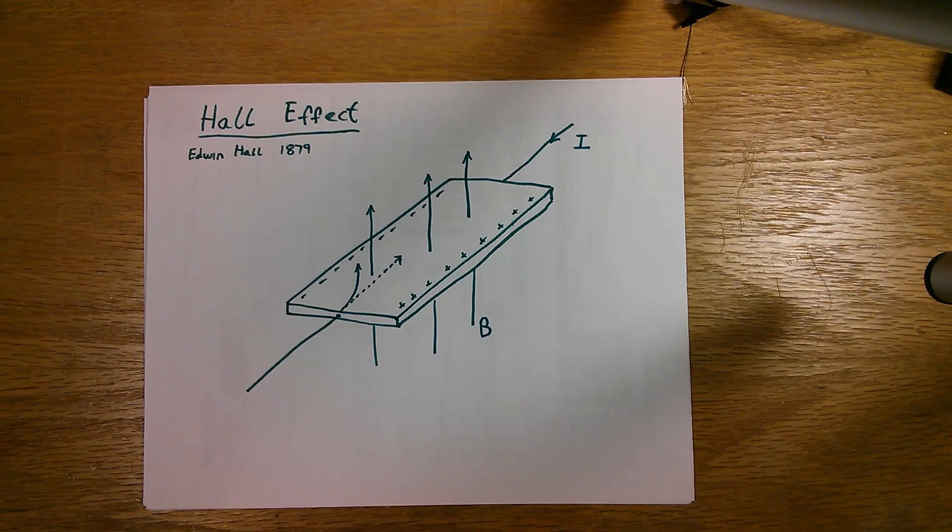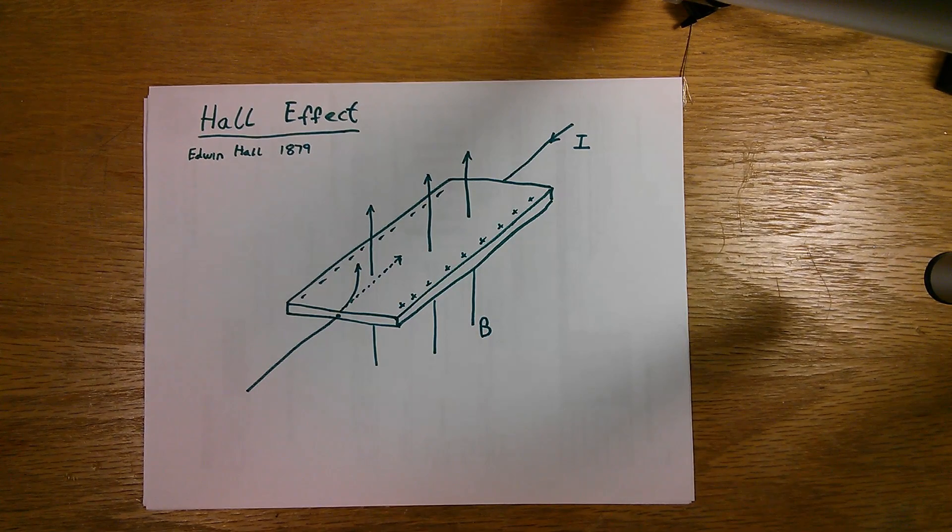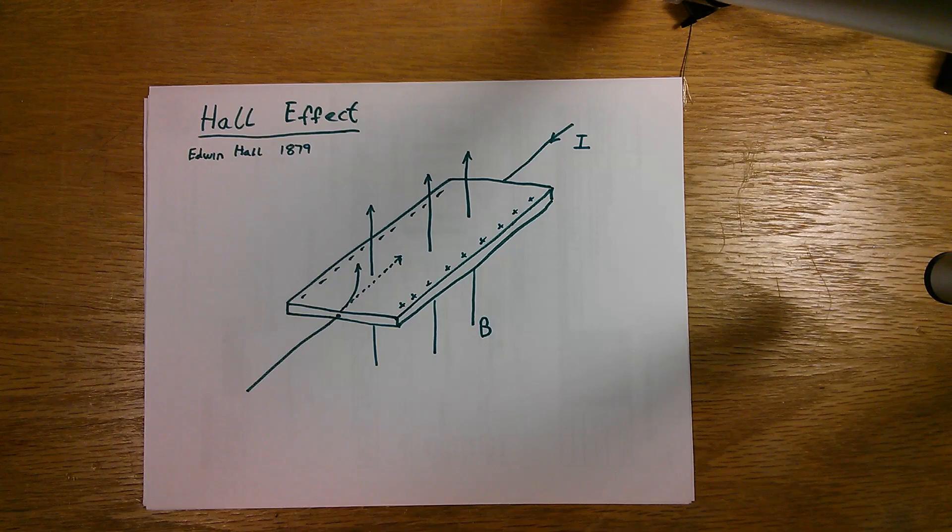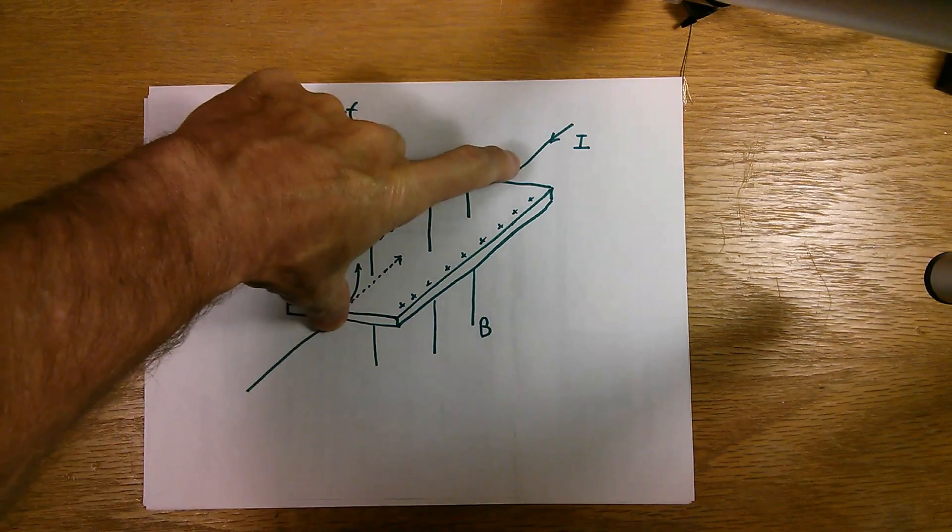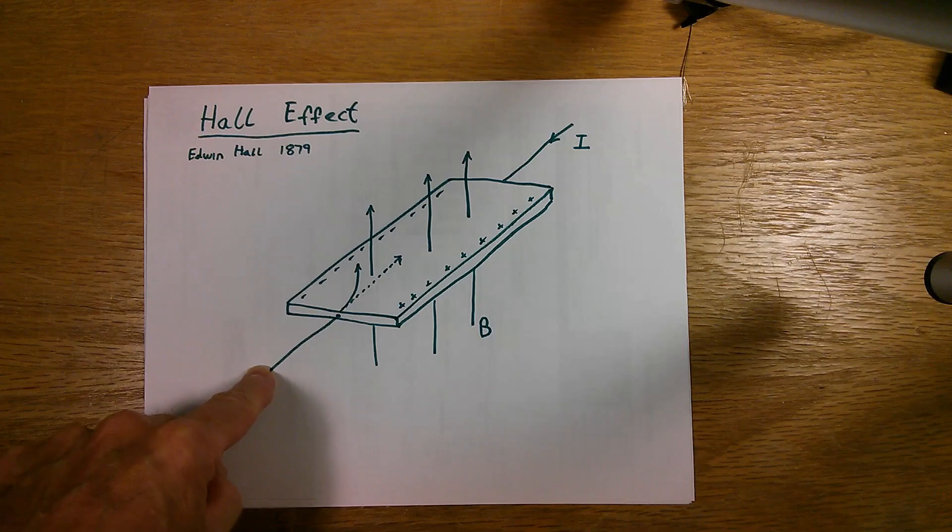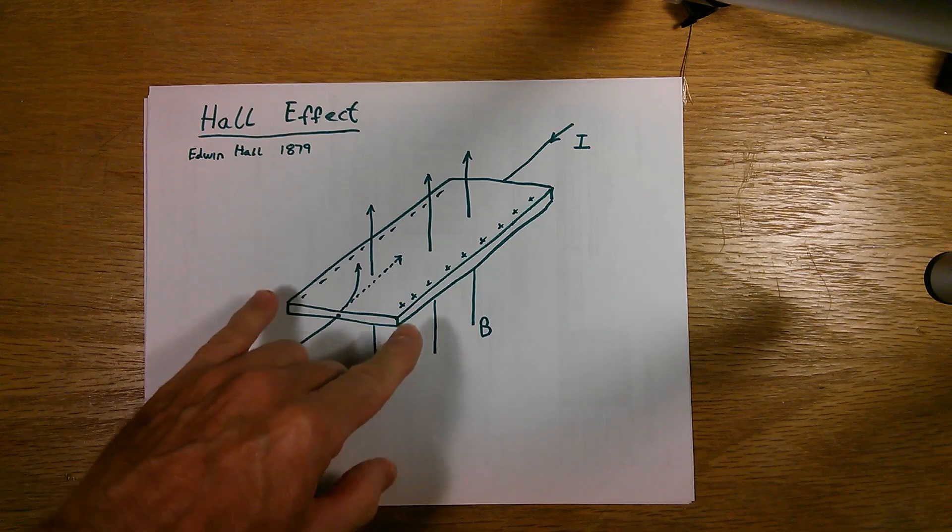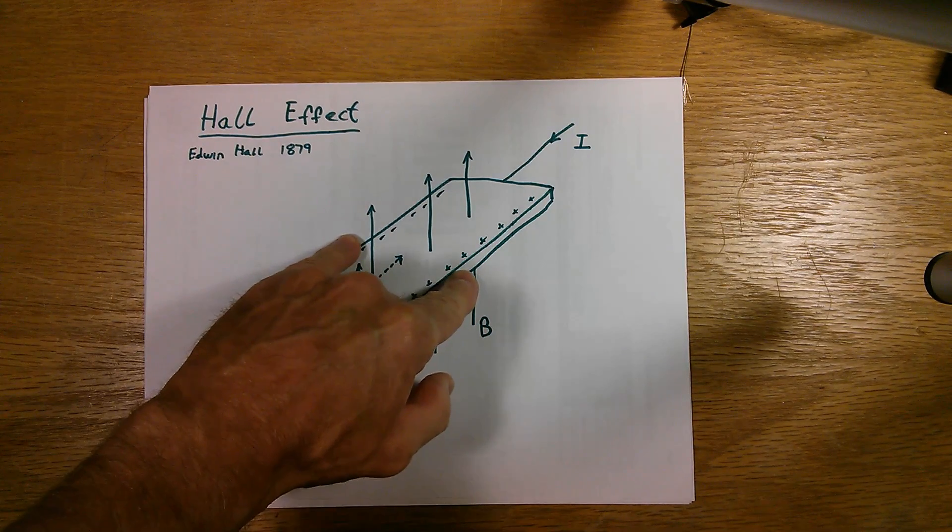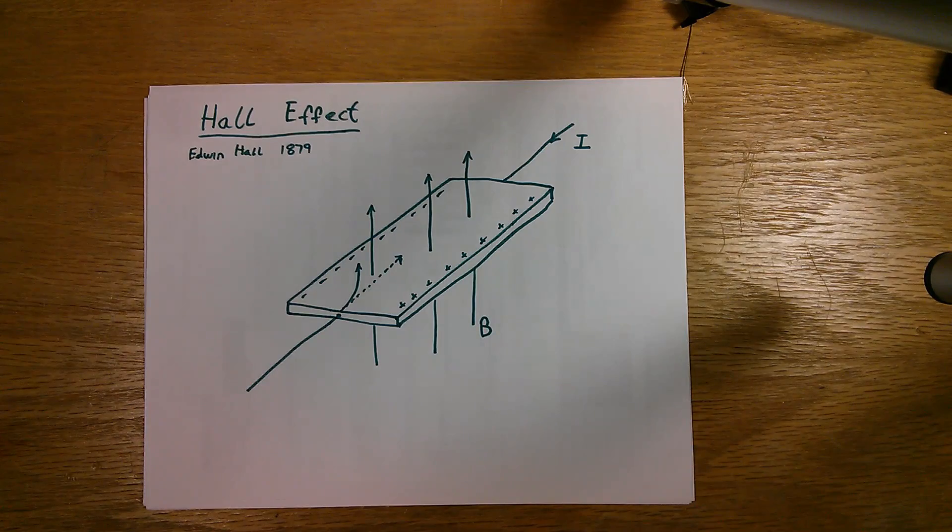And they'll have either three or four terminals on them: two terminals for biasing, passing the current through the device, and two terminals to measure the effect, the voltage across the device.